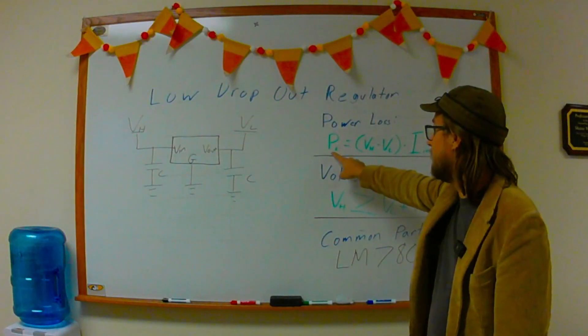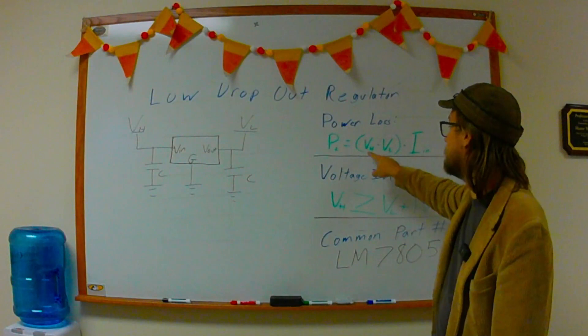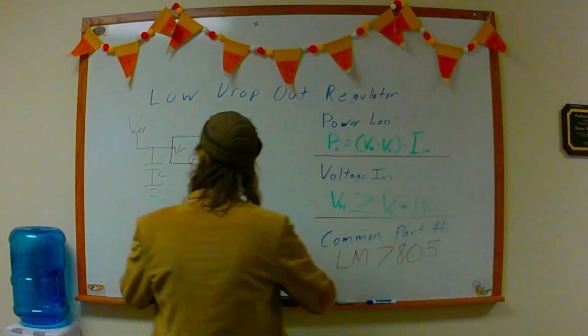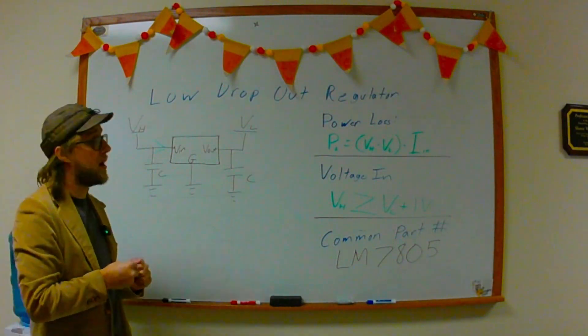And so, to define our power loss, it's just the difference between our input voltage, Vh, minus our output voltage, Vl, times the current, or in this case, In, and that is our power loss.